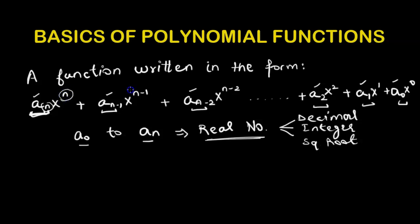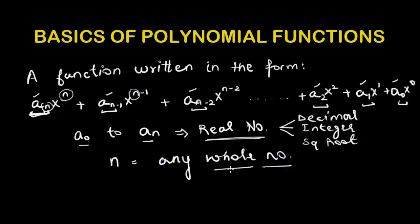Here, n can only be a whole number. Whole numbers are not decimal numbers and not negative numbers — they are just simple positive numbers, for example 1, 2, 3, 4, 5, with no decimals or square roots, up to infinity.